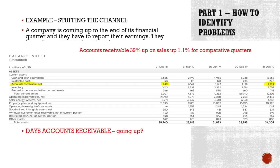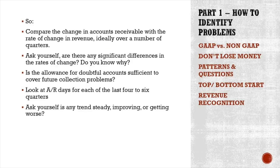The key is to compare the change in accounts receivable with the rate of change in revenue, ideally over multiple quarters and years. Ask yourself: are there any significant differences in the rate of change? Is the allowance for doubtful accounts sufficient to cover future collection problems? Look at accounts receivable days for each quarter and ask whether any trend is steadily improving or getting worse. The key, as always: don't lose money over the long term.